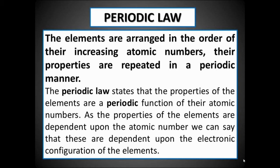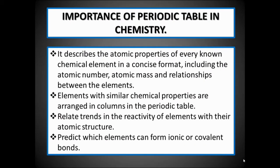The periodic law states that the elements are arranged in the order of their increasing atomic number, and properties are repeated in a periodic manner. The periodic law states that the properties of the elements are a periodic function of their atomic numbers, as the properties of the elements are dependent upon the atomic number and upon the electron configuration of the element.